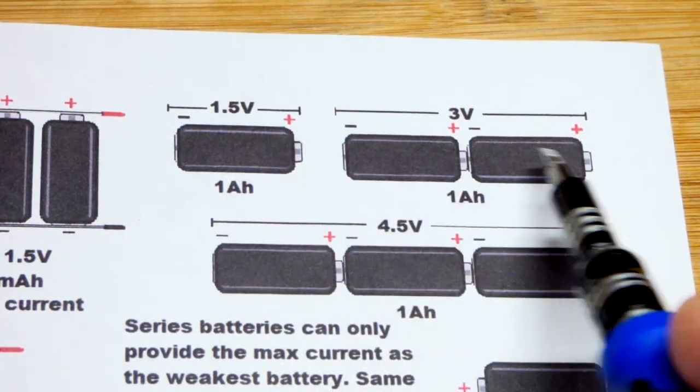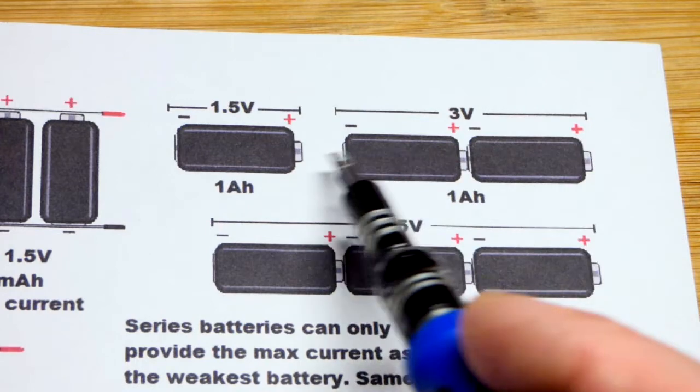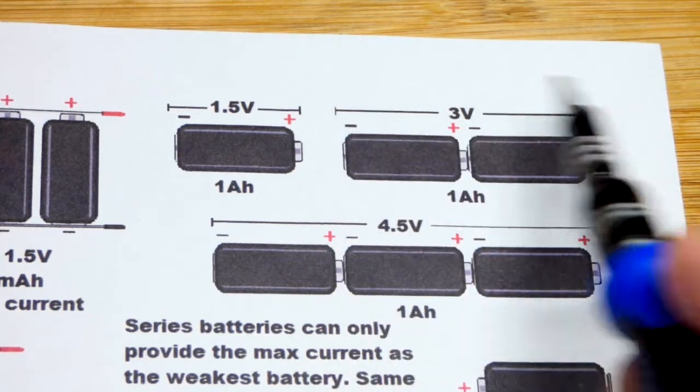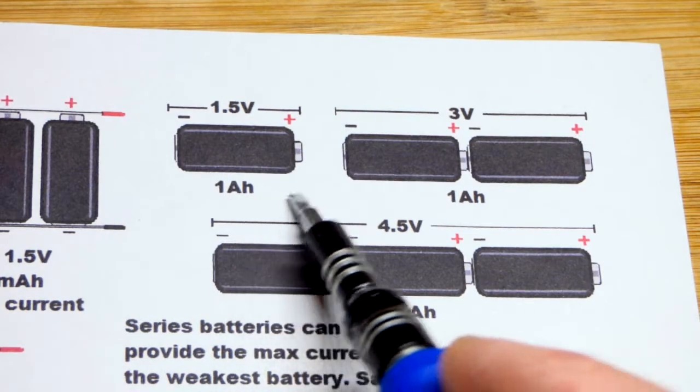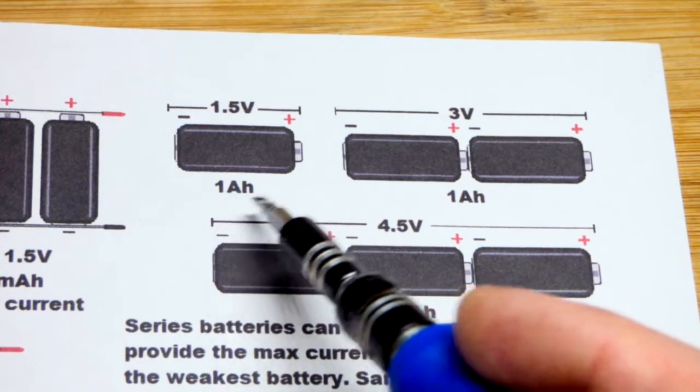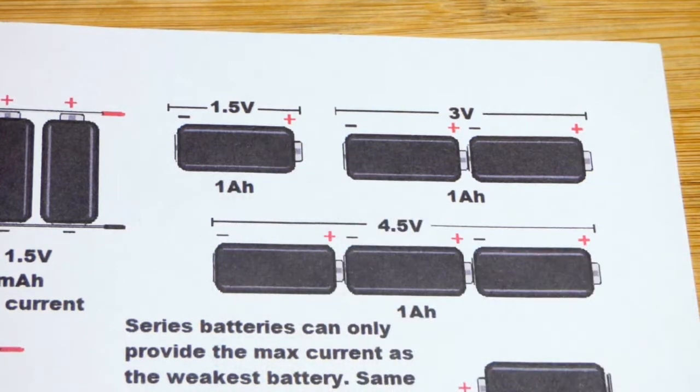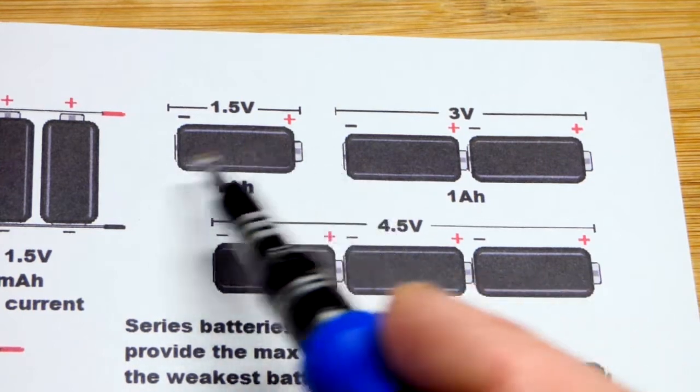You put two of them in series by connecting the negative of one to the positive of the other, and on the other ends you now have a total of three volts. If one battery can provide an amp of current for an hour, you could use less current for more time or more current for less time if it can handle that much current.